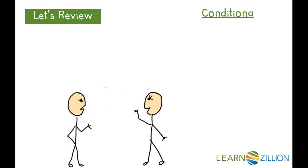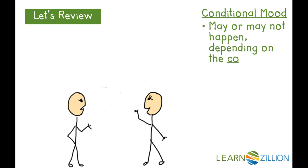Characters can also say things using something called the conditional mood to express different tones, such as hopeful and regretful. The conditional mood involves two statements that are brought together. The action in the sentence may or may not happen depending on the conditions. That's why it's called the conditional mood.